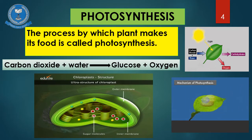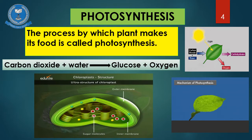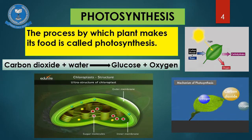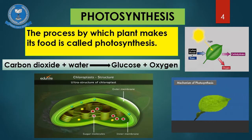The stomata can close at night when no photosynthesis is taking place. Water is absorbed by the roots and sent up to the leaves through the tissue which is called xylem. Sunlight provides the energy that makes the process run. What happens inside the chloroplast? When these three materials are found in chloroplasts, then a chemical reaction starts.